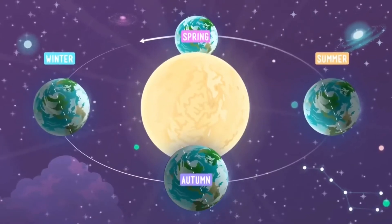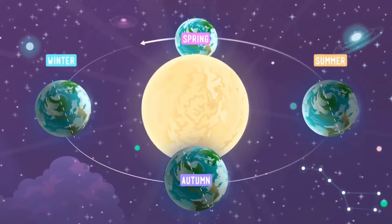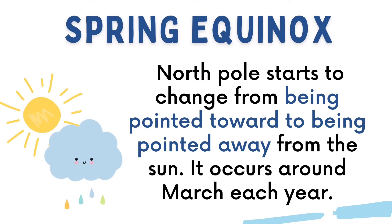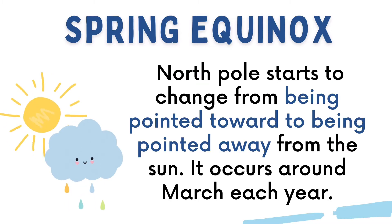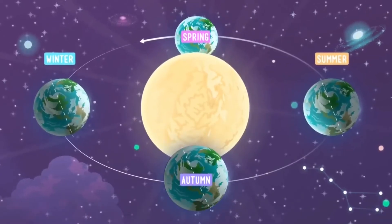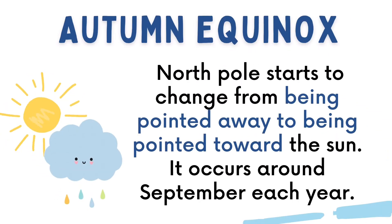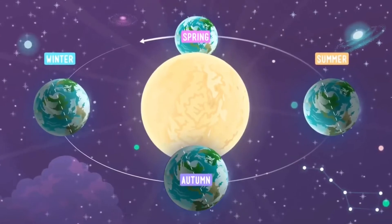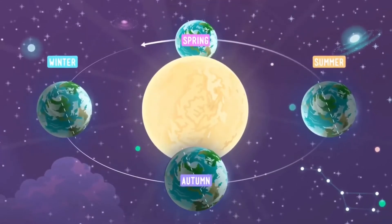On two occasions each year, the Earth's orbital position is such that the sun shines equally on both hemispheres. These are equinoxes. The spring equinox, also called the vernal equinox, is the season where the North Pole starts to change from being pointed toward to being pointed away from the sun. It occurs around March each year. An opposite of that is the autumnal equinox — this is when the North Pole starts to change from being pointed away to being pointed toward the sun. It occurs around September each year. During spring and autumnal equinoxes, the day and night periods are of the same length throughout the globe, since sunlight falls equally on both hemispheres.